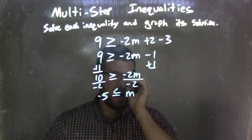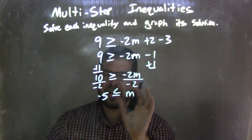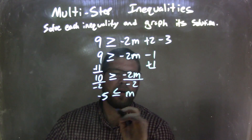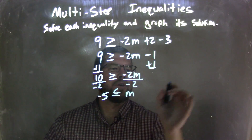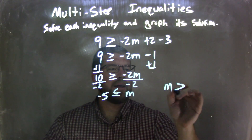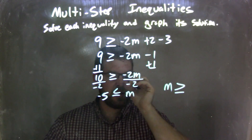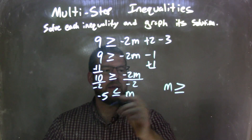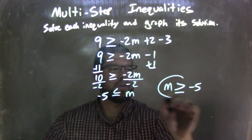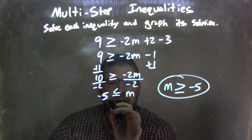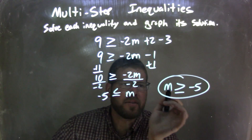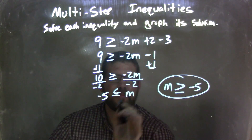Finally, I want to write m by itself first. So I rewrite it as: m is greater than or equal to negative 5. The statement negative 5 is less than or equal to m is the same thing as m is greater than or equal to negative 5.